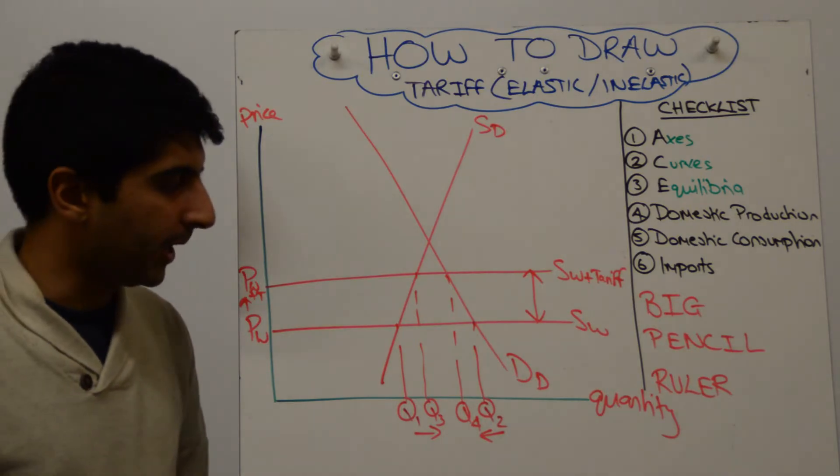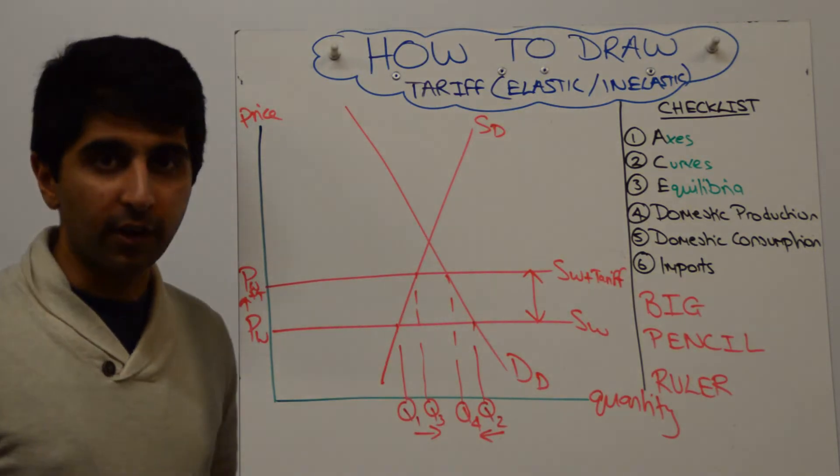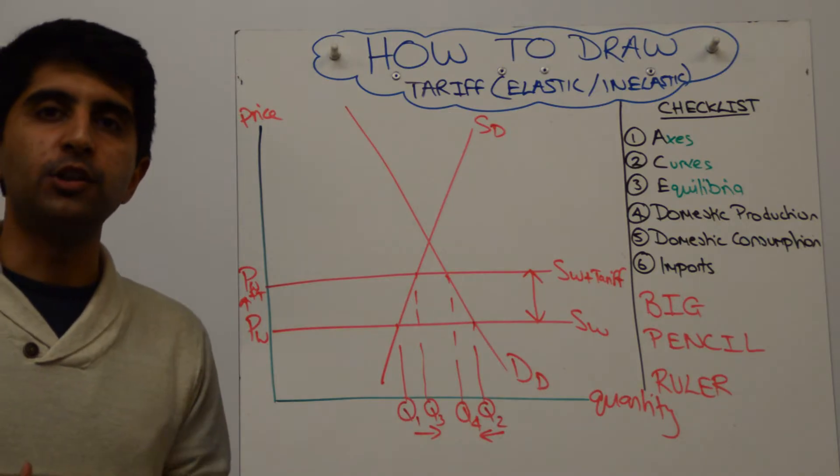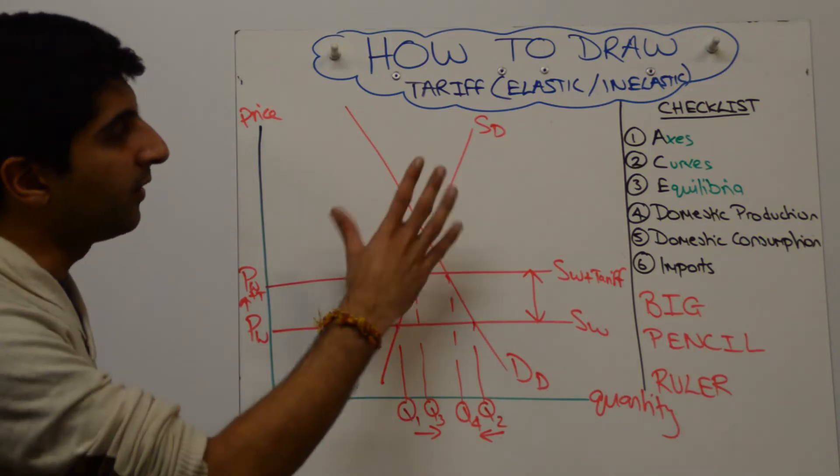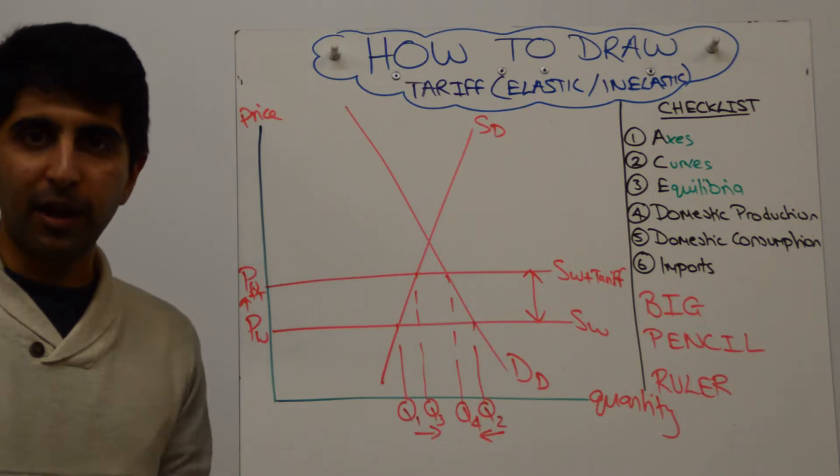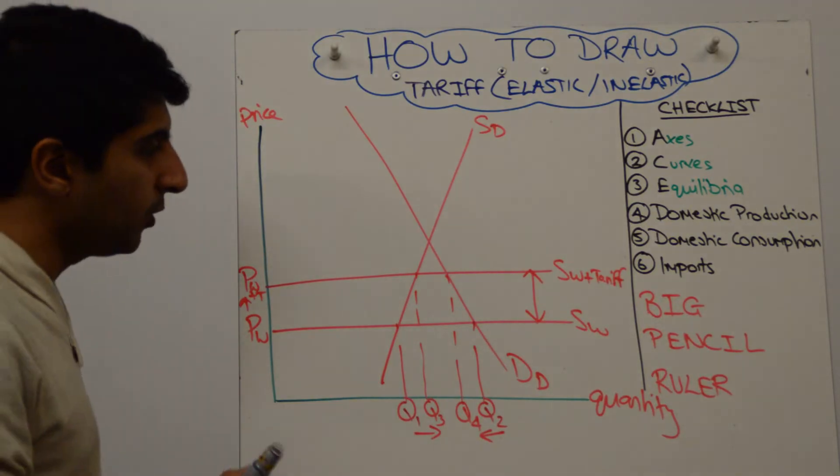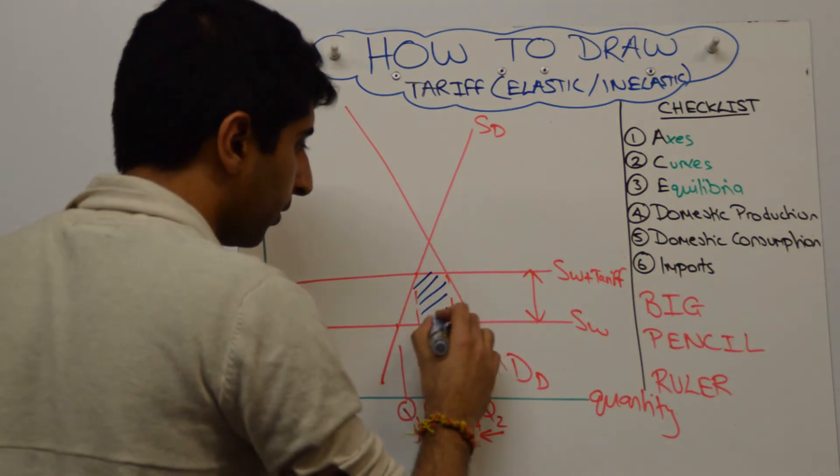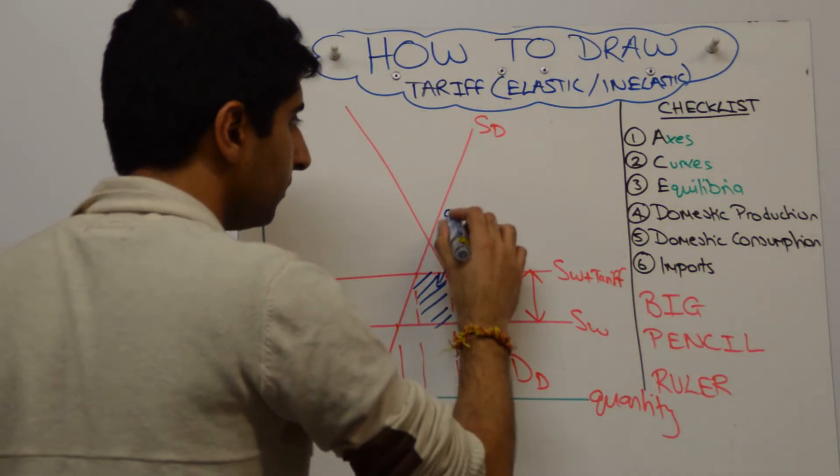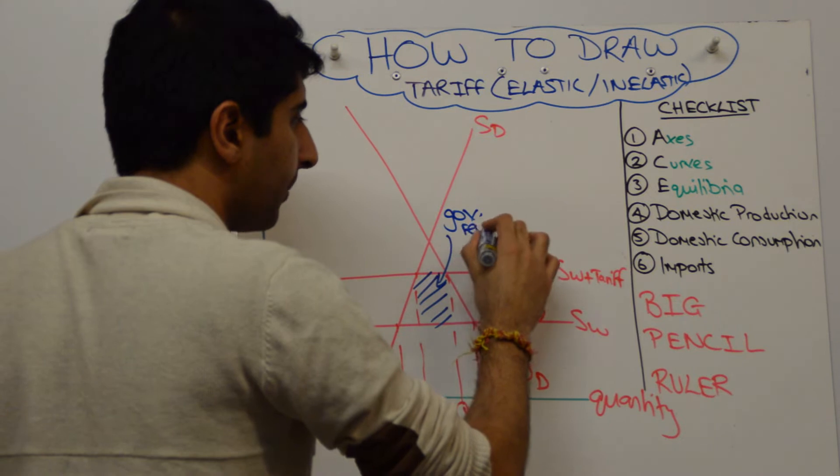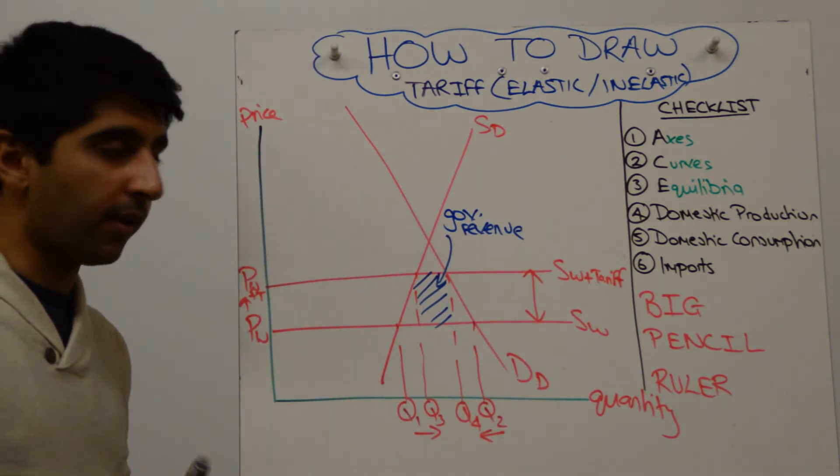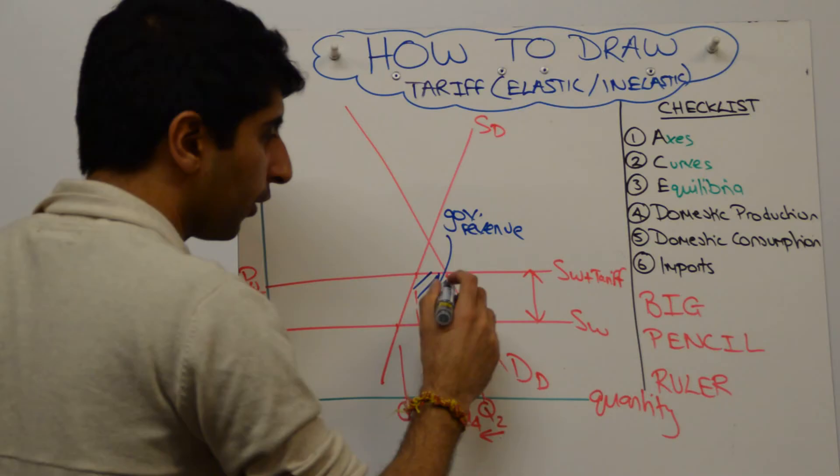Right, that's the point I'm trying to make here. So a nice evaluation diagram to say how the level of imports may not reduce dramatically if there is inelastic demand and supply for whatever this product might be. If you want to, you can also add on the government revenue. So government revenue is this box here. Always worth getting into the habit of doing these three things on the diagram. Showing the government revenue and then the two losses.